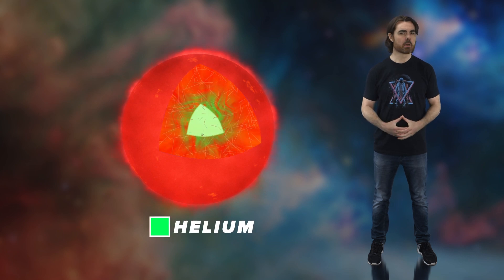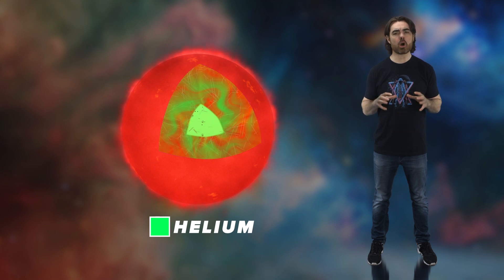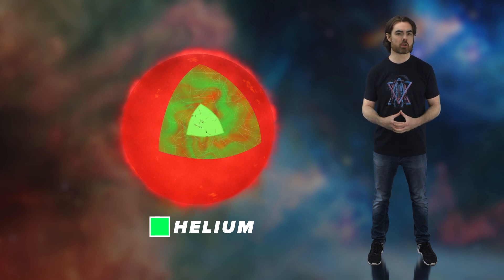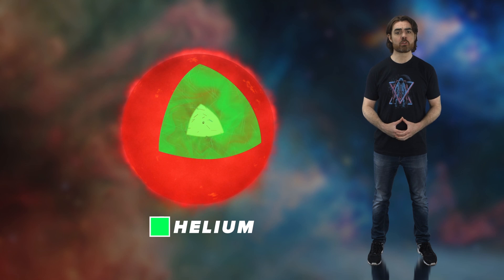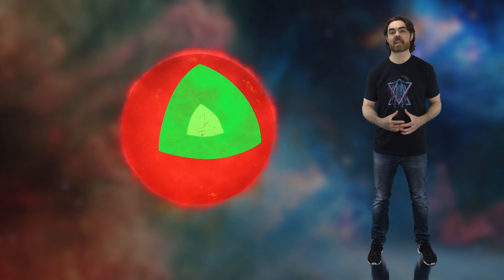But red dwarfs are entirely convective. Rivers of plasma flow from the core to the surface, carrying both energy and the helium produced in the fusion reactions. That helium gets mixed through the star, while new hydrogen is brought to the core for fusion. Over the course of its long life, a red dwarf will convert all of its hydrogen to helium. A red dwarf with 10% of the sun's mass has just as much fuel to burn as the sun does, yet it burns it 1,000 times slower. That means it should live 1,000 times longer. So 10 trillion years instead of the sun's 10 billion years.